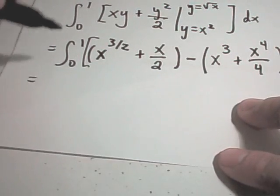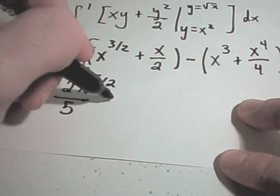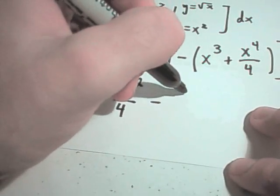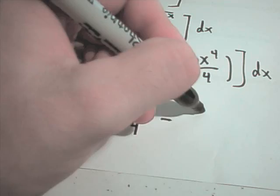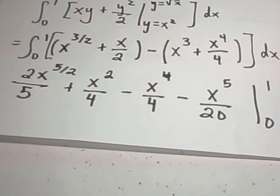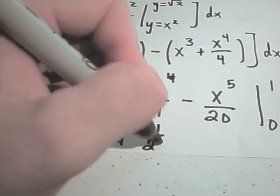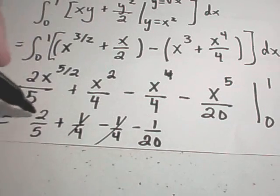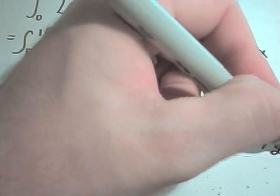There are no like terms to collect so we integrate term by term with respect to x from 0 to 1. Integrating x to the 3 halves gives x to the 5 halves divided by 5 halves, which is 2 fifths x to the 5 halves. Integrating x over 2 gives x squared over 4. Integrating x cubed gives x to the 4th over 4. Distributing the negative, integrating x to the 4th gives x to the 5th over 20. Evaluating from 0 to 1: plugging in 1 gives 2 fifths plus 1 fourth minus 1 fourth minus 1 twentieth. The 1 fourths cancel, and converting 2 fifths to 8 over 20 gives 8 over 20 minus 1 over 20, so the final answer is 7 over 20.